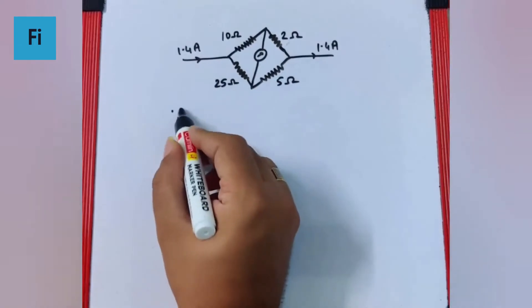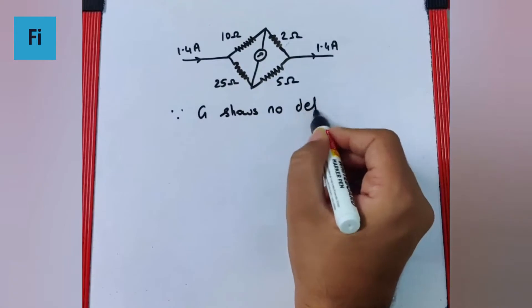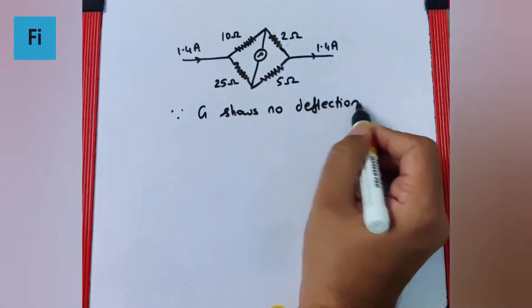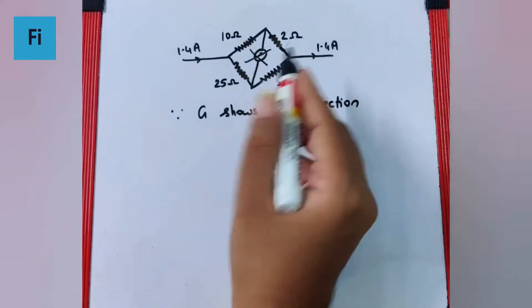Now since galvanometer shows no deflection, we can say this is redundant, so this is not present at all. That means,